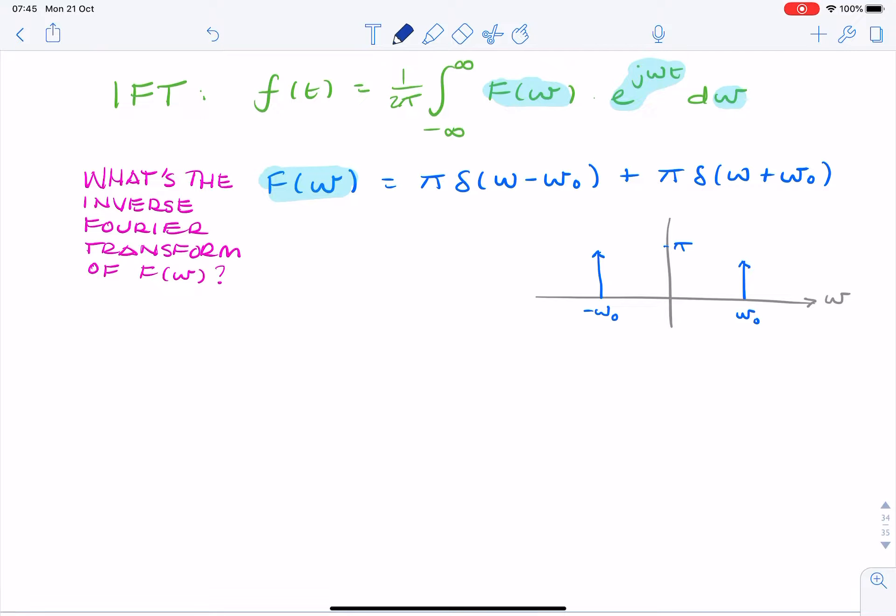So I'll write that out. f of t equals, that's a scaling factor of 1 over 2 pi. I'm going to integrate from minus infinity to infinity.